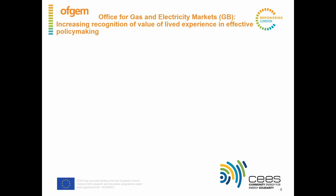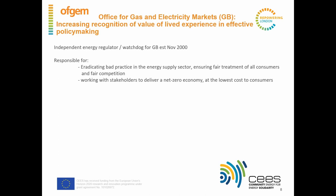Ofgem is the independent energy regulator for Great Britain, established in 2000. It's responsible for eradicating bad practice in the energy supply sector, ensuring fair treatment of all consumers and fair competition, and working to deliver a net zero economy at the lowest cost to consumers. Ofgem has come under heavy fire for many good reasons. In 2013, Ofgem started to shift its priorities towards a focus on vulnerability, spending the next five years trying to define and identify the category of 'energy vulnerable' person — though this was done in a fairly top-down manner using traditional engagement methods like consumer panels, surveys and advisory groups.